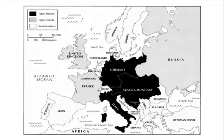Looking at the map, the triple alliance is shown in black and the triple entente in light gray. By mid-August 1914, the battle lines were clearly drawn. On one side we had Austria-Hungary and Germany — they would be known as the Central Powers, named for their location at the center or heart of Europe. Bulgaria and later the Ottoman Empire would also join the Central Powers hoping to regain lost territory.